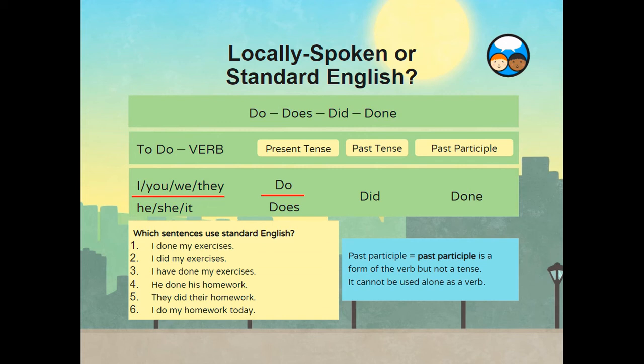Which sentences use standard English? Sentence one: I done my exercises. Sentence two: I did my exercises. Sentence three: I have done my exercises. It is clear that sentences two — I did my exercises — and three — I have done my exercises — are in standard English. Now sentences four, five and six: he done his homework; they did their homework; I do my homework today. Sentences five and six are in the standard English form: they did their homework, and I do my homework today.